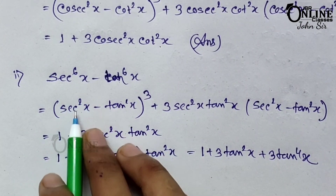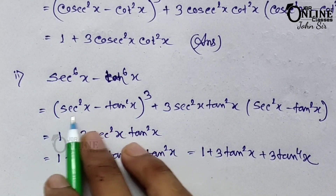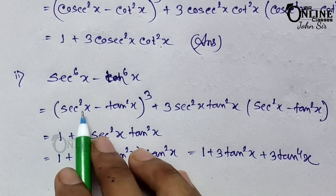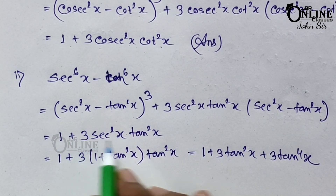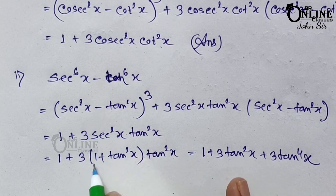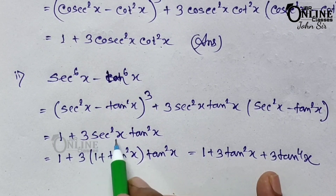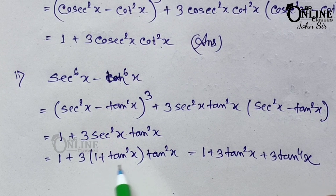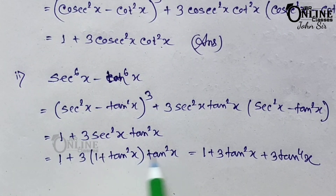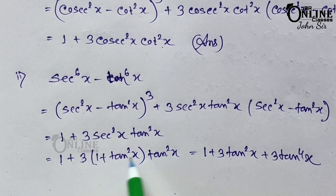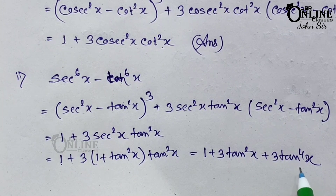Sum number 10.2: sec⁶x − tan⁶x. Apply a³ − b³ = (a−b)[(a−b)² + 3ab] similarly. Since sec²x − tan²x = 1, we get 1 + 3·sec²x·tan²x. Substituting sec²x = 1 + tan²x: 1 + 3(1 + tan²x)·tan²x = 1 + 3tan²x + 3tan⁴x, proved.